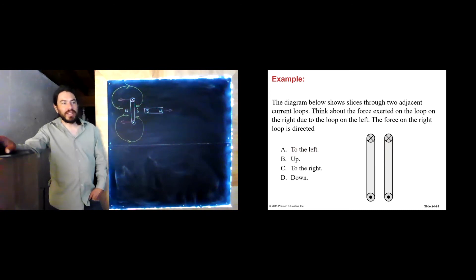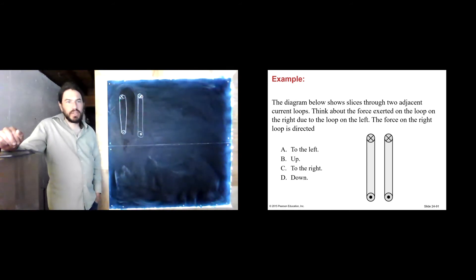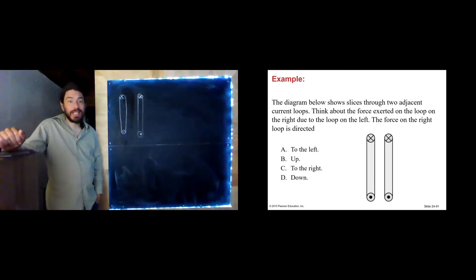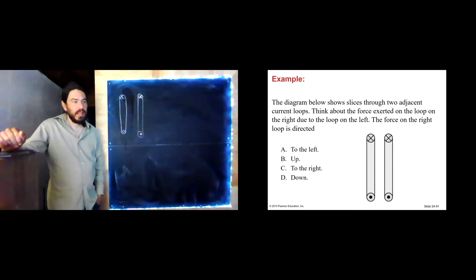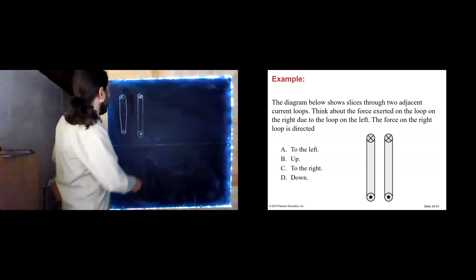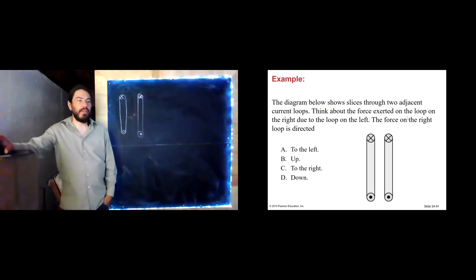Here's another one. The diagram shows slices through two adjacent current loops. Think about the force exerted on the loop on the right due to the loop on the left. Looking at these two current loops, the currents are in the same direction. We know that currents in the same direction attract each other, so I would expect these two to attract. If we are thinking about the force on the loop on the right, that would be to the left. PowerPoint does agree.